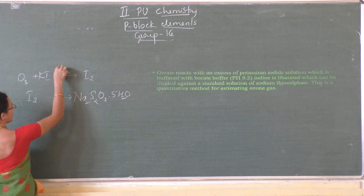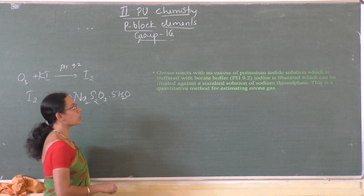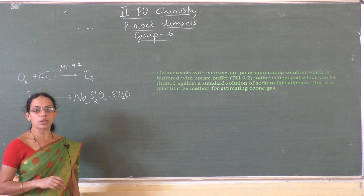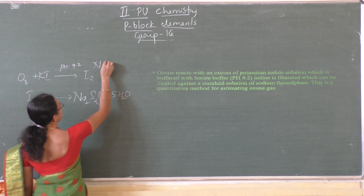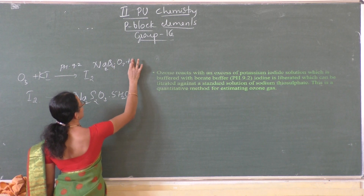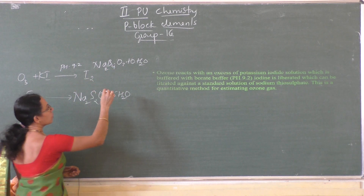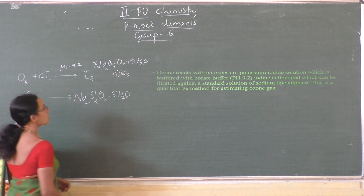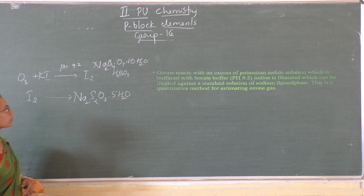When ozone is treated with excess of potassium iodide it releases iodine, and this reaction is carried out in the presence of a buffer solution of pH 9.2. The buffer solution is borate buffer — a mixture of sodium tetraborate or borax (Na2B4O7·10H2O) and boric acid (H3BO3). The mixture of these two is called borate buffer which gives a pH of 9.2.